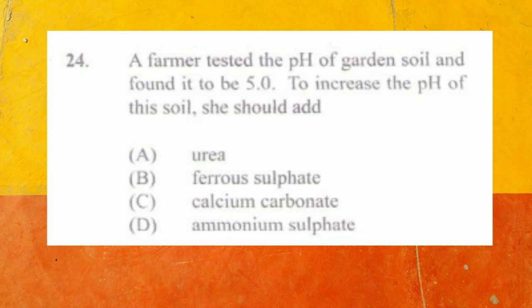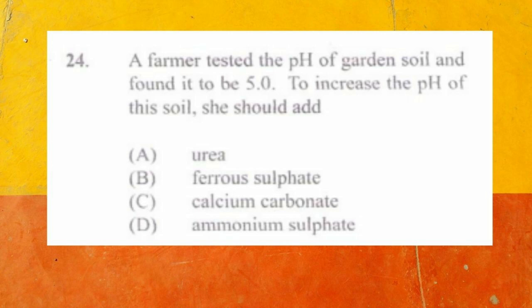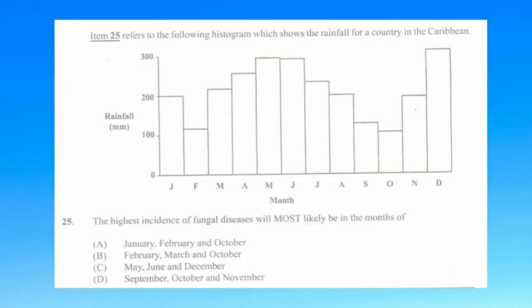Question number twenty-four: a farmer tested the pH of garden soil and found it to be five. To increase the pH she should add a) urea, b) ferrous sulfate, c) calcium carbonate, d) ammonium sulfate. The answer is c) calcium carbonate. A pH of five is acidic; to make it more alkaline you add calcium carbonate (white lime). Adding fertilizers like ferrous sulfate or ammonium sulfate would make soil more acidic.